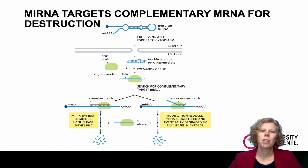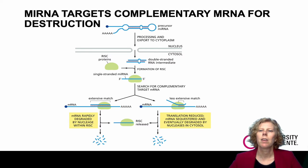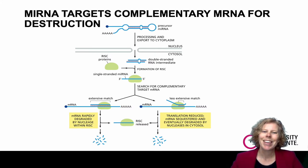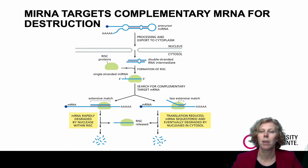A microRNA targets a complementary mRNA molecule for destruction. MicroRNAs are tiny RNA molecules, about 22 nucleotides in length, that are found in the cytosol and control gene expression by base pairing with specific mRNAs, thereby reducing both the stability of the mRNA and its translation into protein. Each precursor miRNA transcript is processed to form a double-stranded intermediate, which is further processed to form a mature single-stranded microRNA. This microRNA assembles with a set of proteins in a complex called the RNA-induced silencing complex, or RISC, which then searches for mRNAs that have a nucleotide sequence complementary to its bound microRNA.